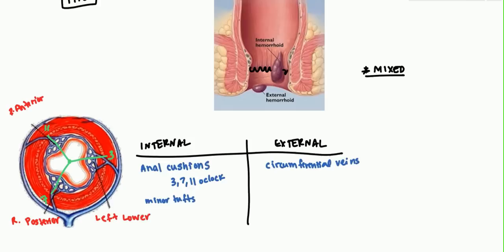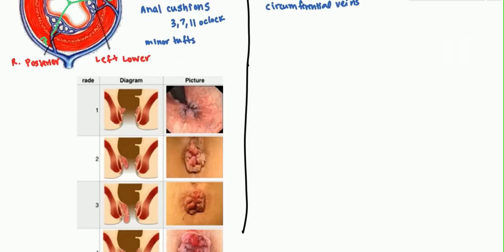Now let's look at the different grades of internal hemorrhoids. Since internal hemorrhoids prolapse, they're graded based on how much they prolapse. In grade one, there is no prolapse — when you visibly look at the anus there's nothing to see from the outside. In grade two, the hemorrhoid bulges out during defecation, but it will spontaneously regress on its own.